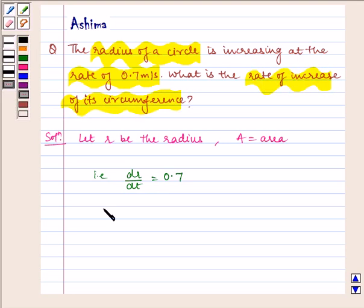The circumference of a circle is given by c is equal to 2 pi r where c is the circumference of the circle and R is the radius. And here we have to find dc by dt.